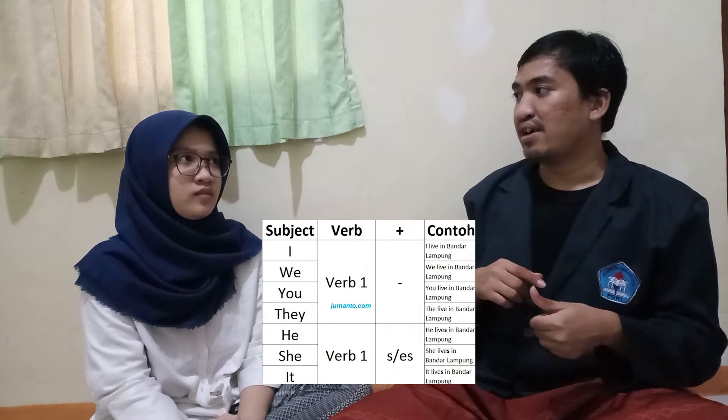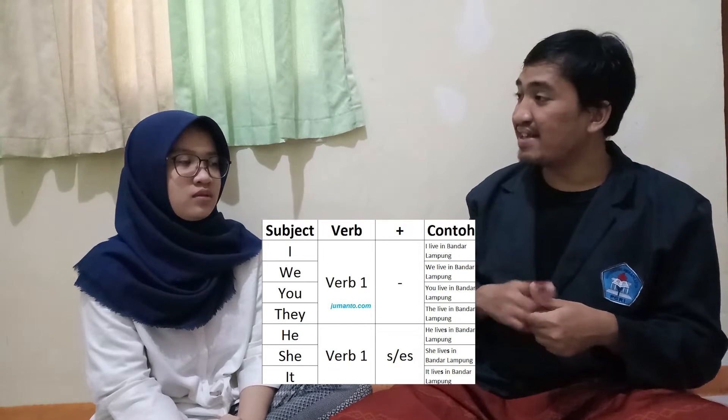The subject — you know about the subject first. You can take the subject from someone or maybe an object. In the positive sentence: Subject, and then you can use Verb. But Verb one — in the simple present tense you can use Verb one. Verb one, what is Verb one? Verb one is, just like 'swim,' just like 'buy something,' but in the base form. And next, you should add S or ES after the verb.